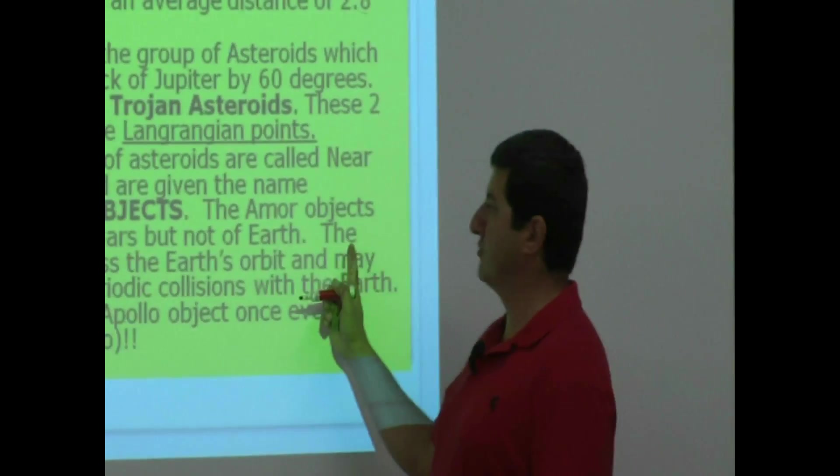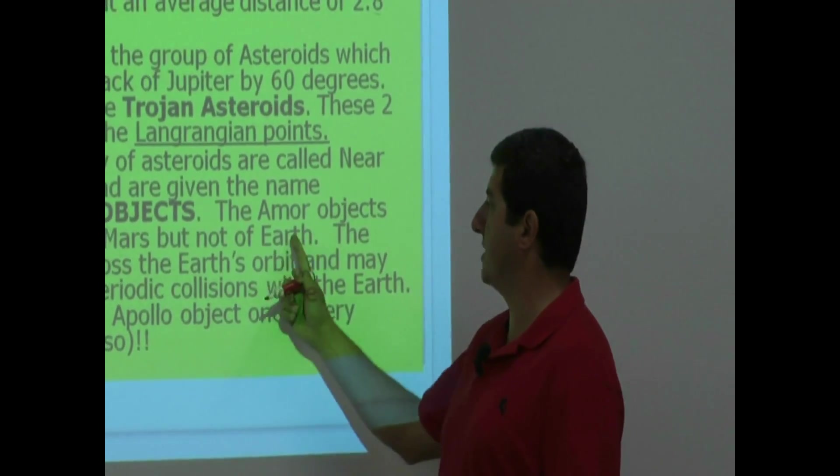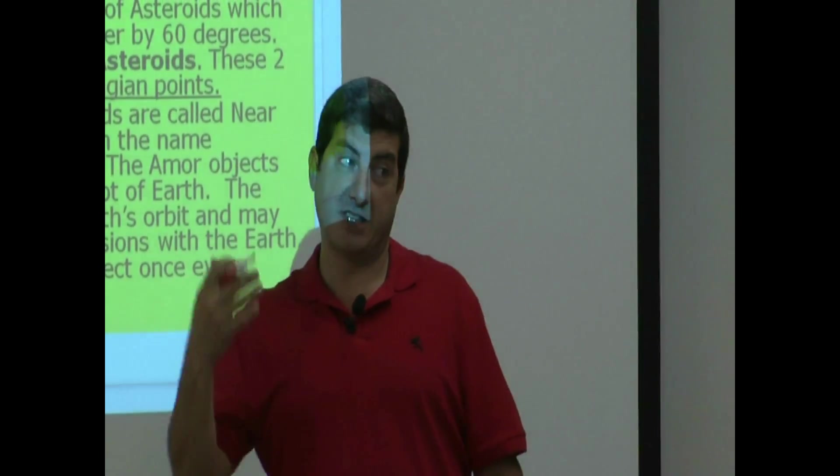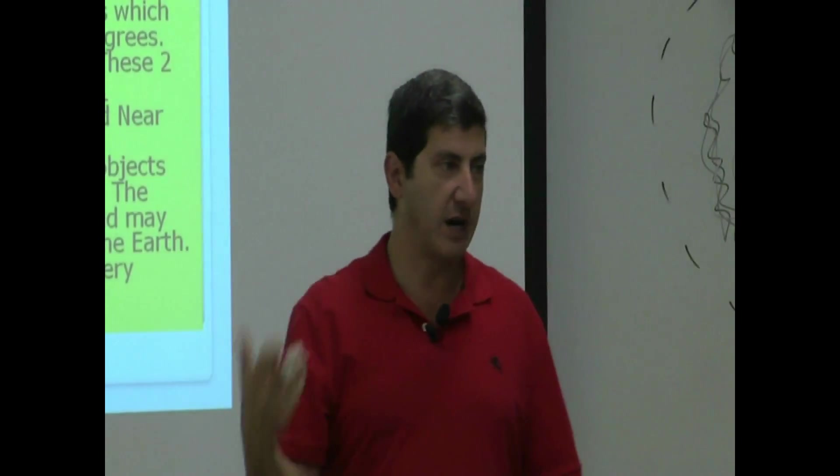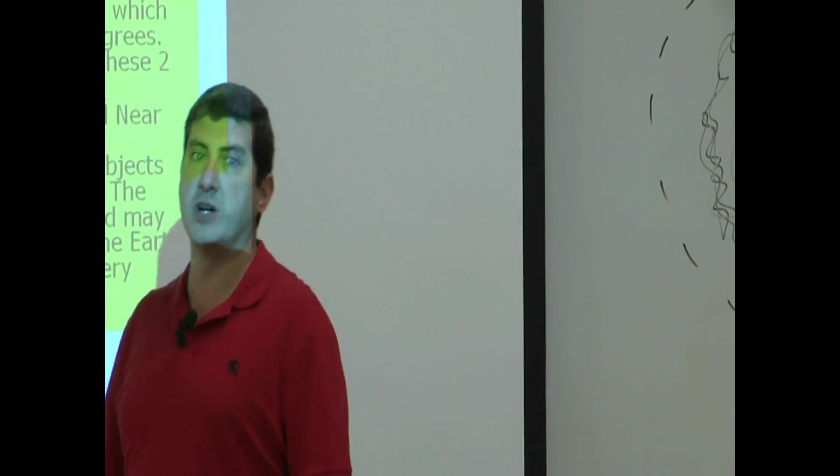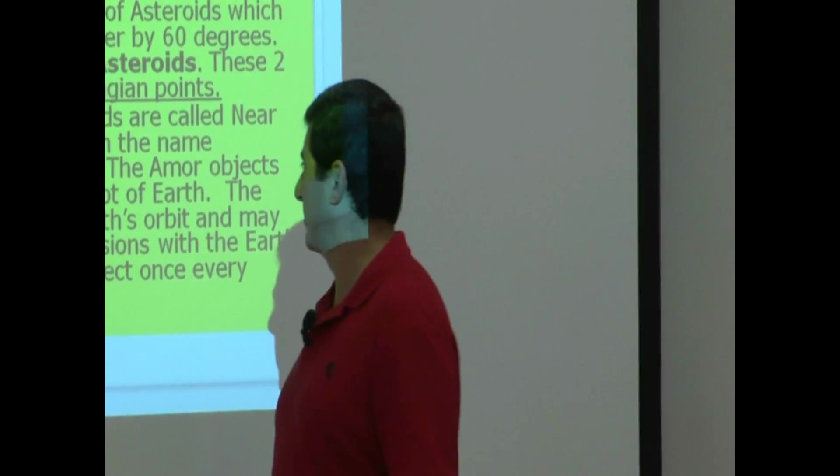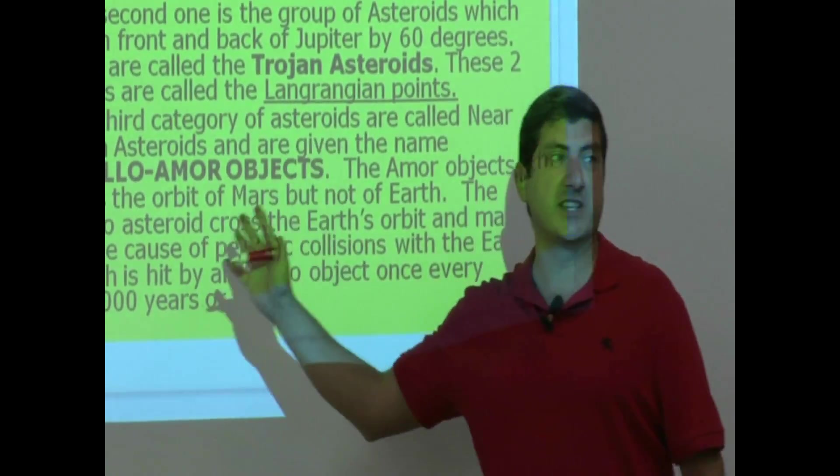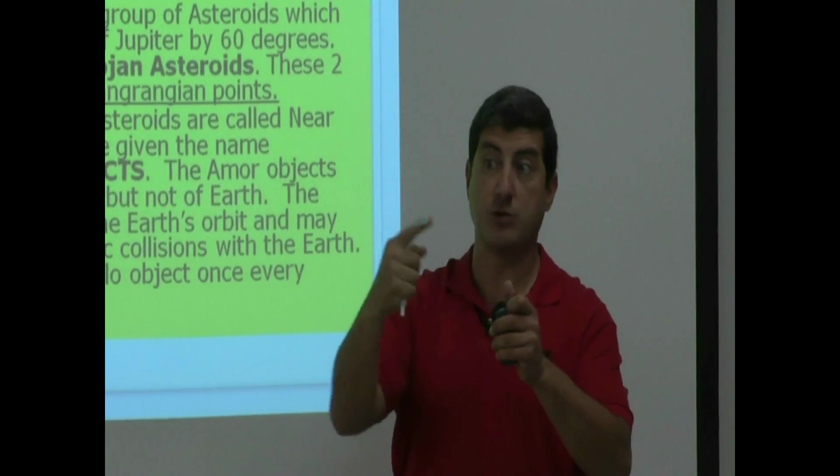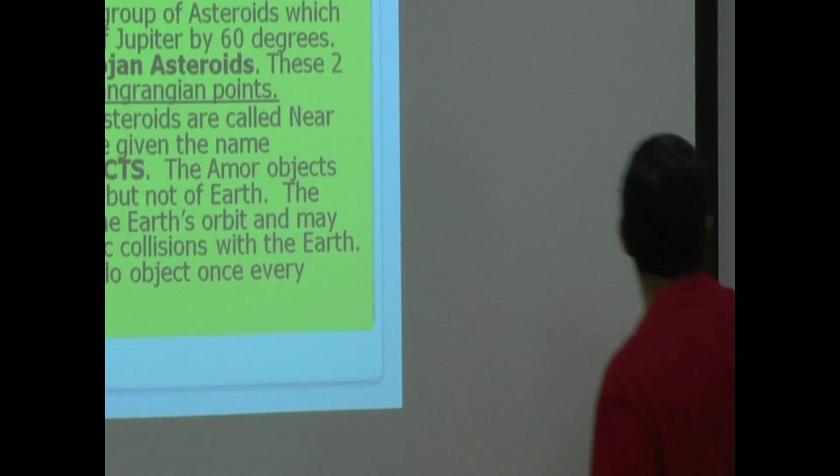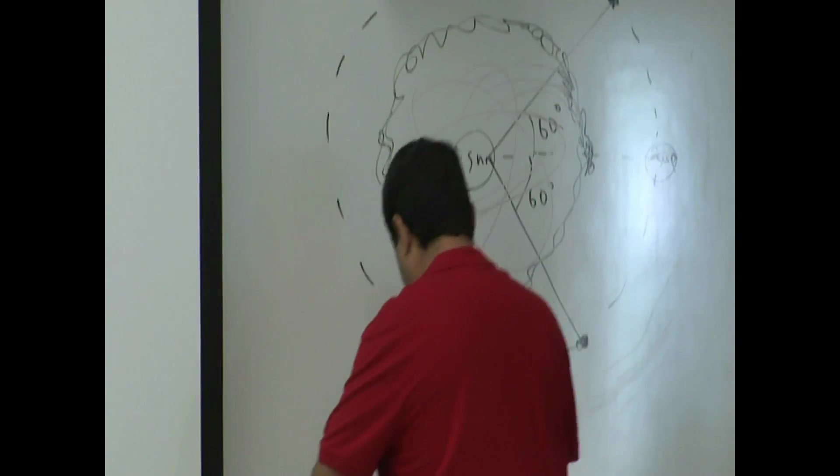These are divided into two separate categories. One is called Apollo and Amor. The Amor objects cross the orbit of Mars, but not of Earth. The way to remember this, and the way I remember it, is think of the word Amor means love. So, the Amor asteroids love us too much ever to cause us harm.